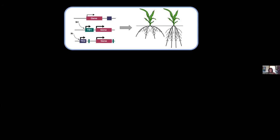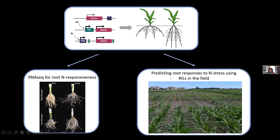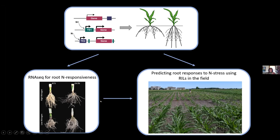Starting from our original hypothesis, we devised two series of experiments. The first is an RNA-seq study for root nitrogen responsiveness in these two lines. The other is a more field-based analysis using the family of recombinant inbred lines from the larger NAM panel, to start identifying specific regions — genes or genomic regions — connected to nitrogen responsiveness. Ultimately, the RNA-seq study may help us develop our experiments with the RILs.